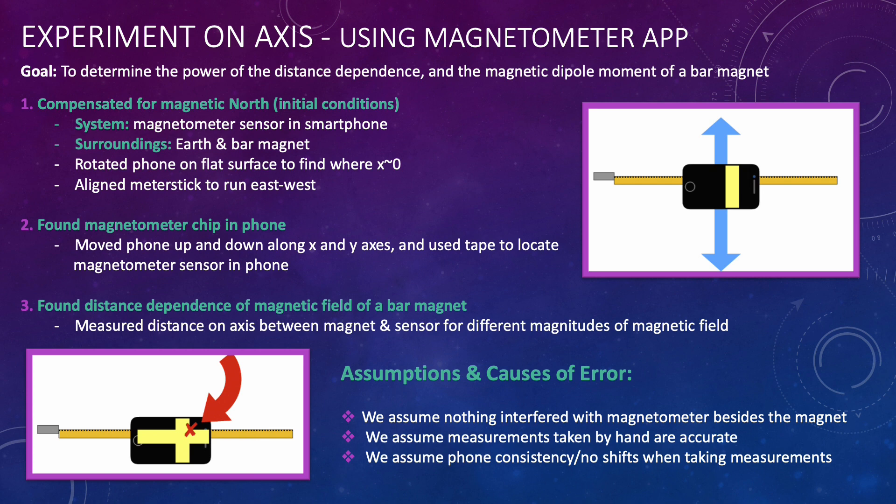First I did the on-axis experiment to determine the power of distance dependence and magnetic dipole moment. I first had to compensate for magnetic north following the steps as seen below where the system in the experiment is the magnetometer sensor in my phone and the surroundings are the earth and the bar magnet respectively. I followed a procedure to locate the sensor in my phone sliding my phone up and down the x and y axes respectively so that I could record distances on the axis between the magnet and my phone sensor for varying magnitudes of magnetic field.